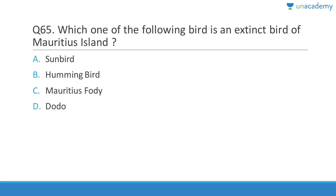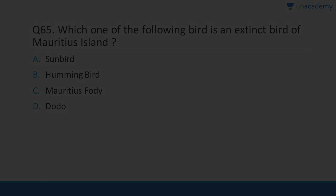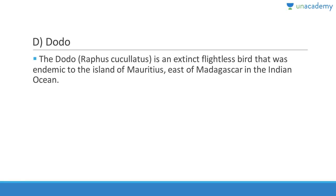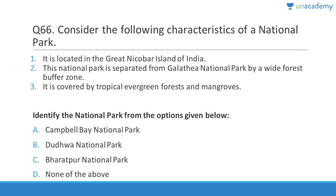Question sixty-five: Which of the following birds is an extinct bird of Mauritius Island? Answer is dodo — everybody must know about it. Before humans arrived in the 15th century everything was fine, but once humans landed there they completely destroyed it. Dodo, Raphus cucullatus, is an extinct flightless bird that was endemic to the island of Mauritius, east of Madagascar, in the Indian Ocean.